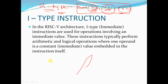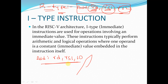Whereas in the case of I-Type instructions, the instruction will look like: ADDI RD, RS1, 10 — so instead of storing the value inside a register, we are directly giving one immediate value. The immediate value will be used in the operation, and the result we are going to store in the destination register.